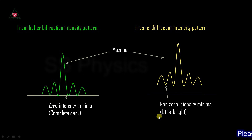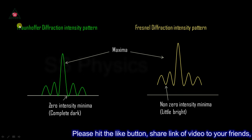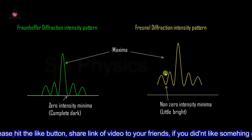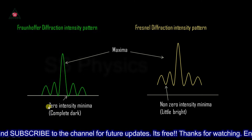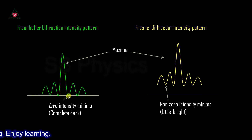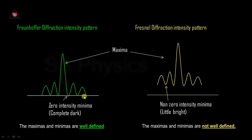The meaning of well-defined versus not well-defined can be understood from the intensity pattern figures. In Fraunhofer diffraction, the minimas have zero intensity — they are completely dark — giving a high-contrast bright-dark pattern, which is why the maximas and minimas are called well defined. In Fresnel diffraction, the minimas have non-zero intensity — they are less bright than the maximas, not completely dark — resulting in a less-bright/bright pattern with lower contrast, and therefore the maximas and minimas are not well defined.